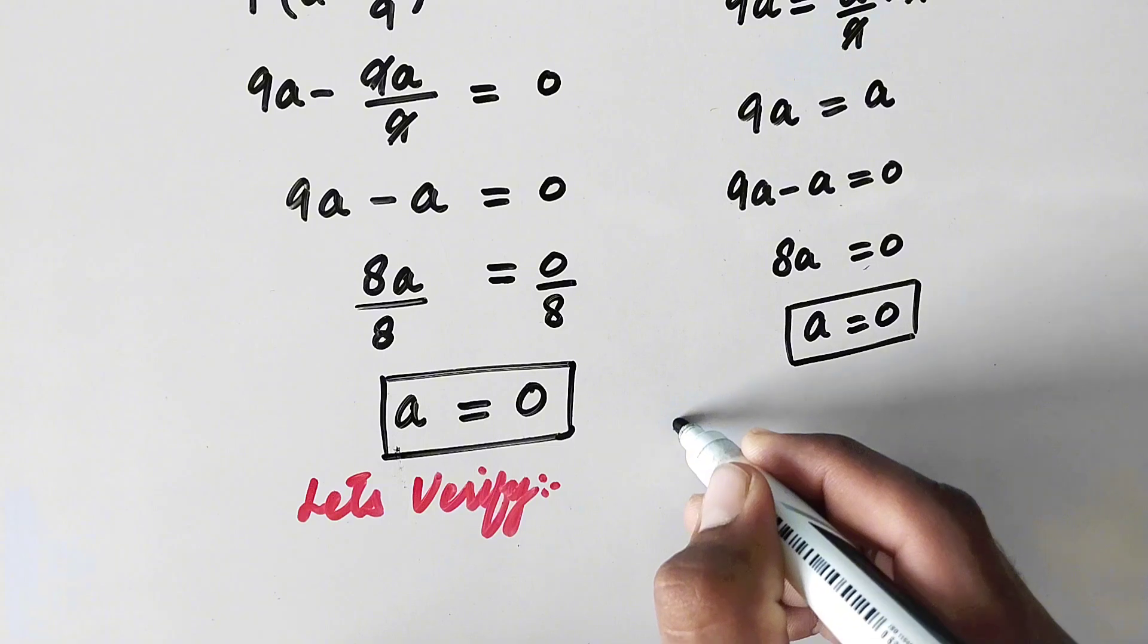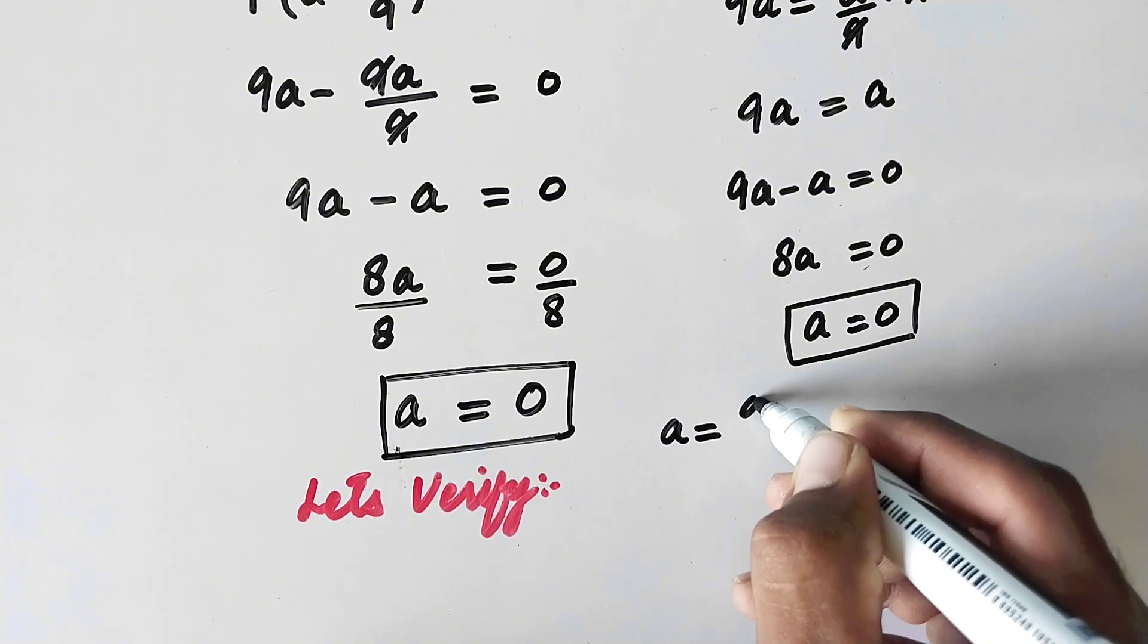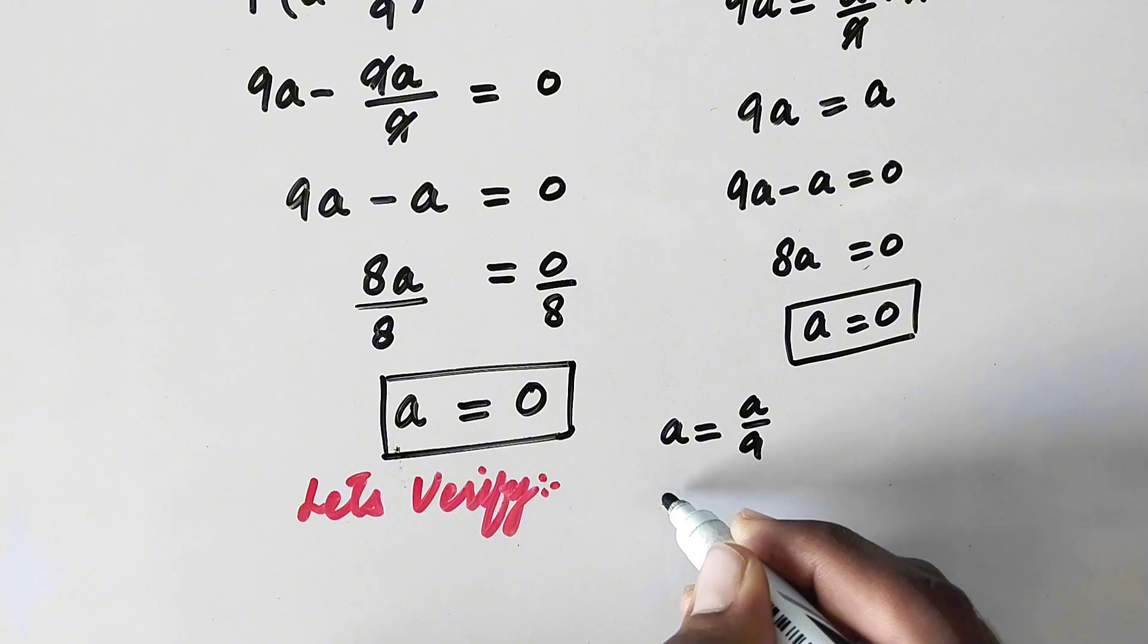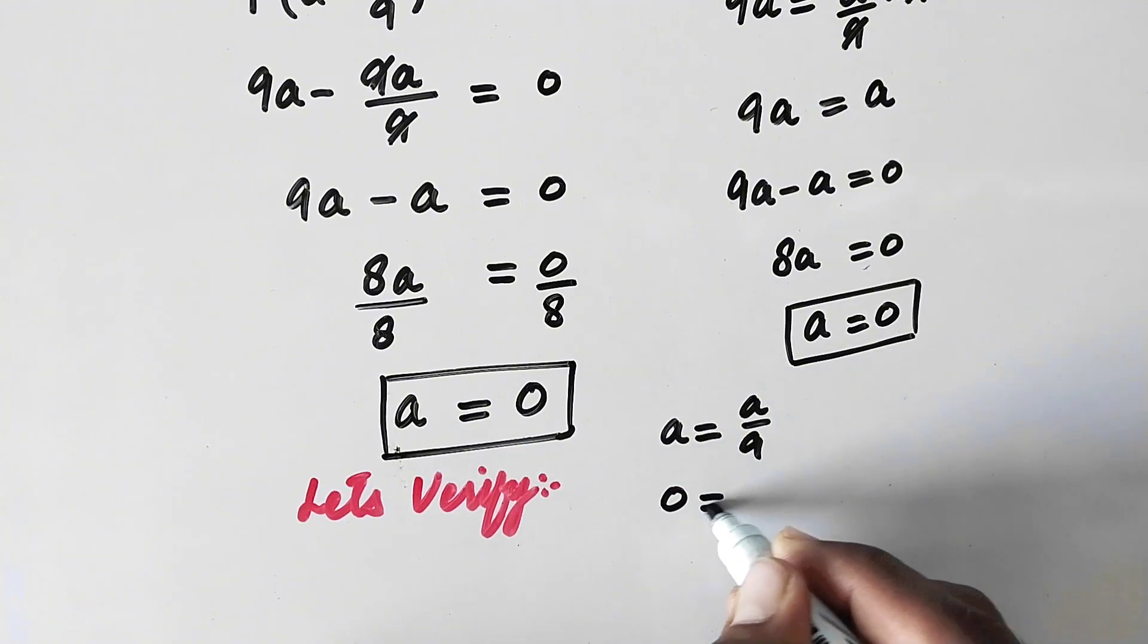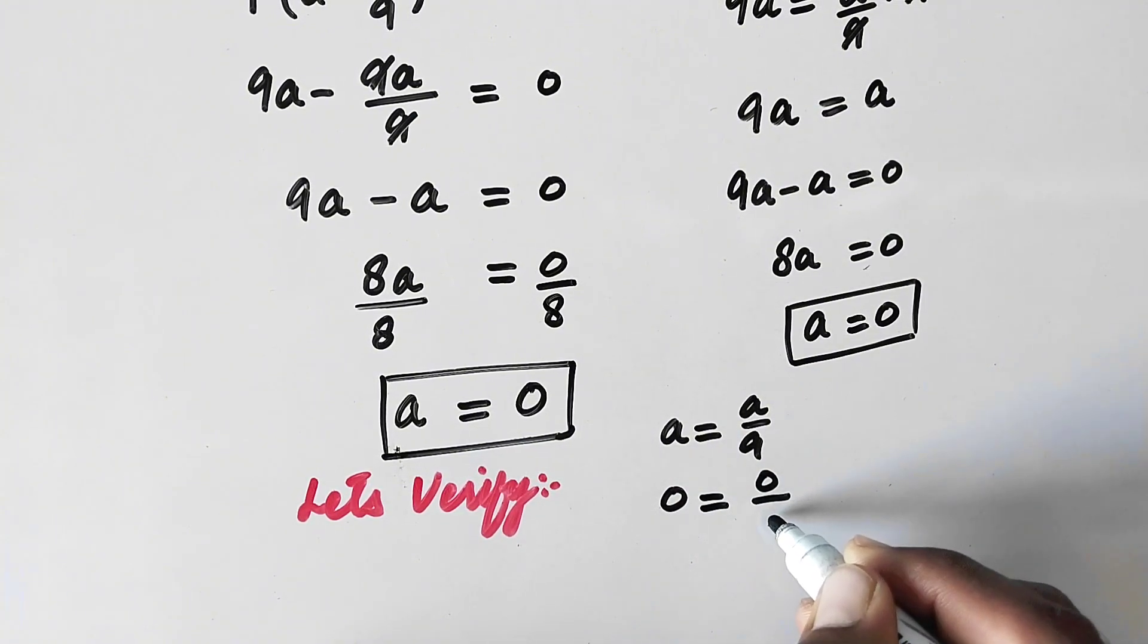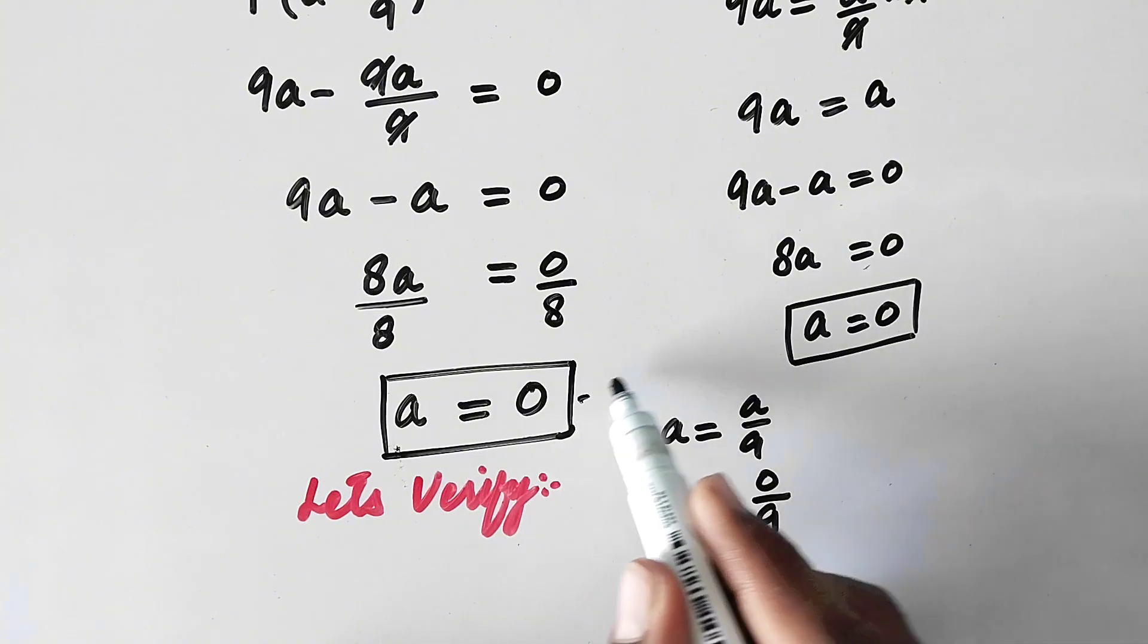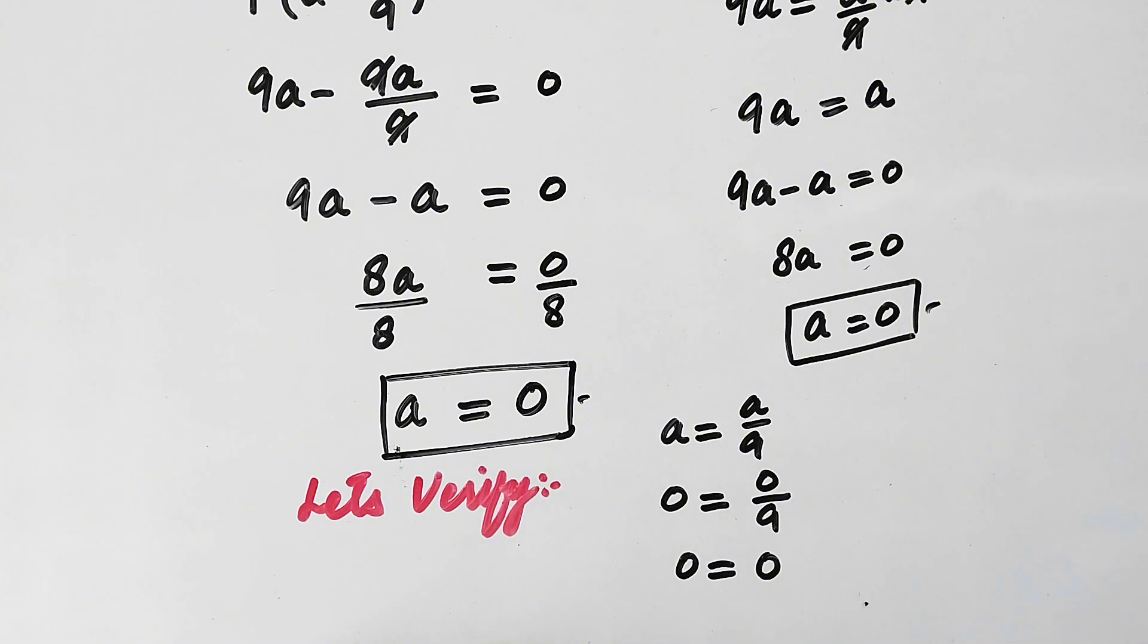And now let's verify. So here is the original equation that is a equal to a over 9. And here is the value of a that is 0 equal to 0 over 9. And 0 will be equal to 0 over 9 is equal to also 0. So here left hand side is equal to right hand side which verifies that a equal to 0 is the right answer.